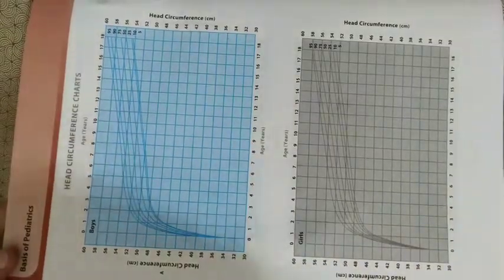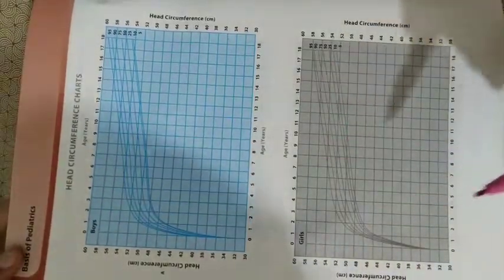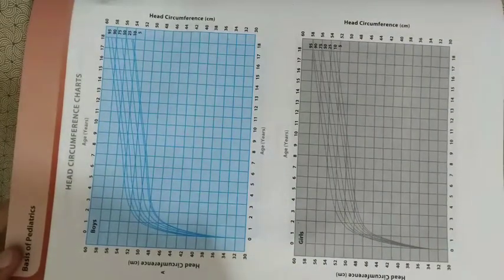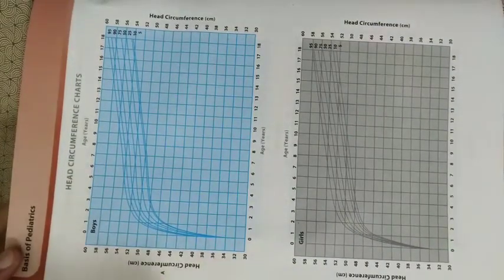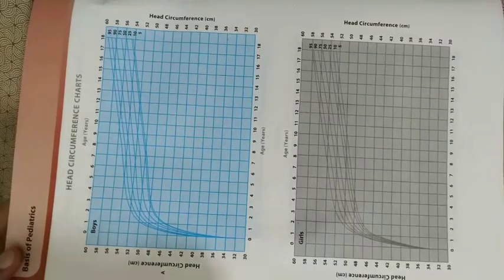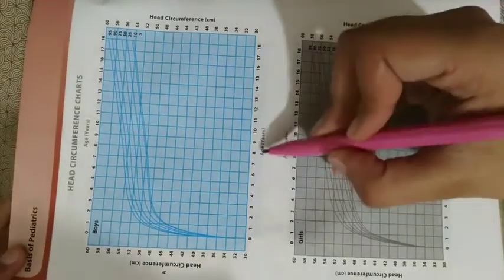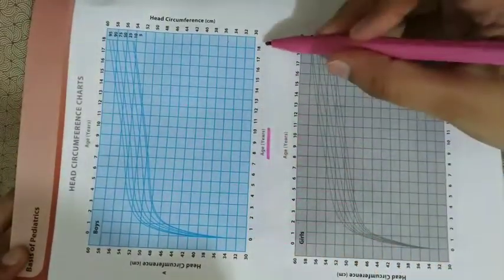Every chart is different for boys and girls. There is no age breakdown like for 2 years and above different. It extends from age 0 to almost 20 years.